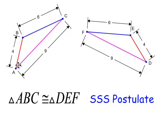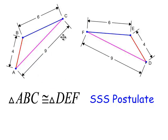Let's look closely. AB is 4 — that's the first two letters. DE is what corresponds, and DE is 4 as well. BC, in blue, is 6 — the second two letters — and that would be EF, which is 6 as well. And the last, the outside letters, AC is 9, and DF is 9. So the letters all correspond in our notation, and these two triangles are congruent by the side-side-side postulate.